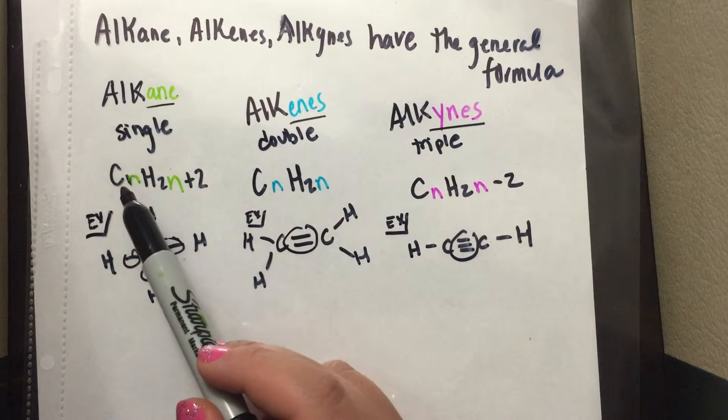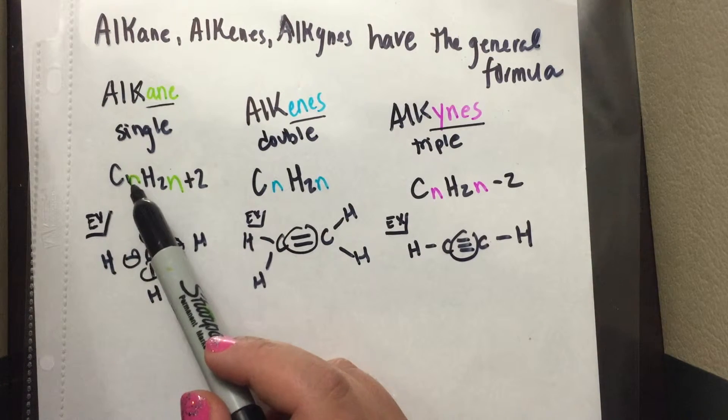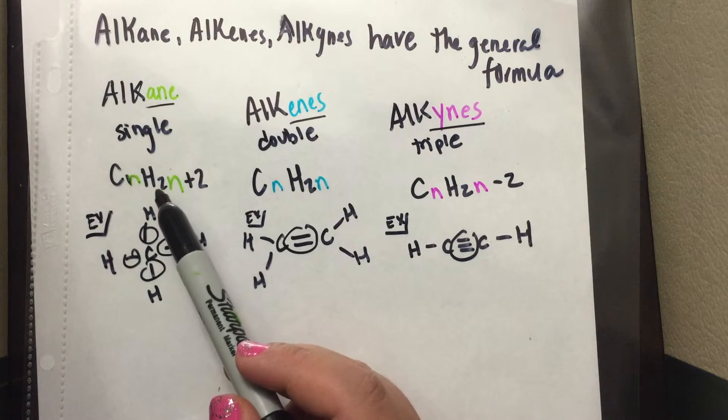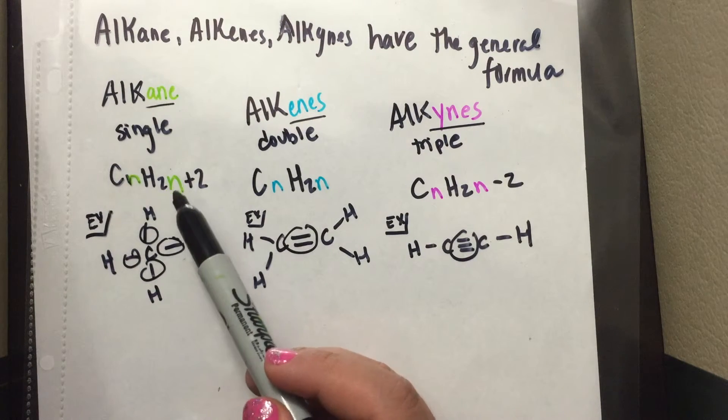There's one carbon, so it's C1H2. 2 times 1 is 2 plus 2 is 4. So that's where you see the example right there is C, and there's 4 hydrogens.